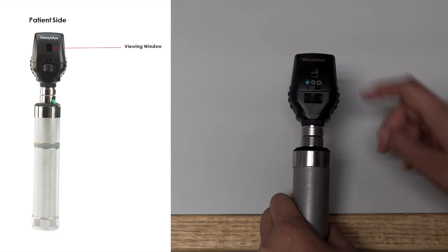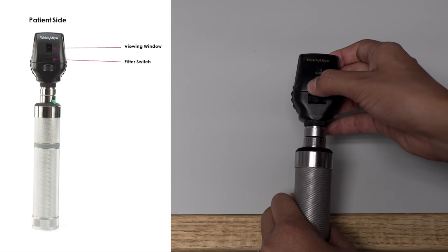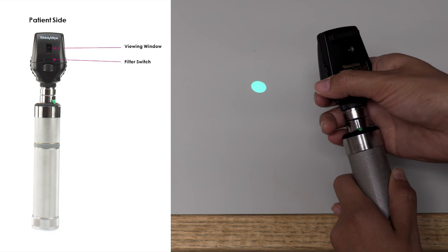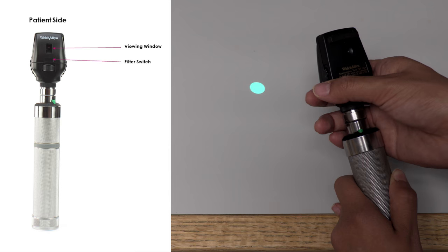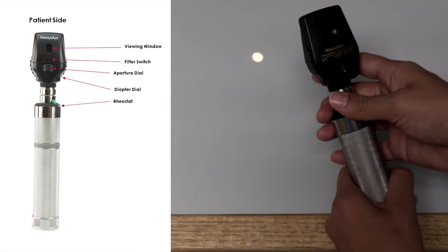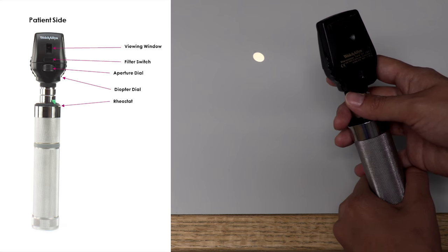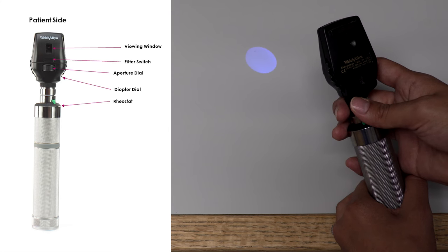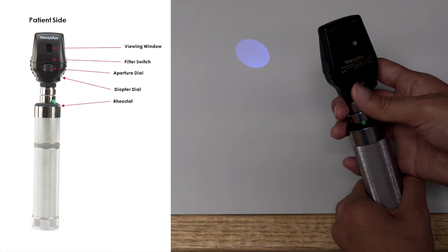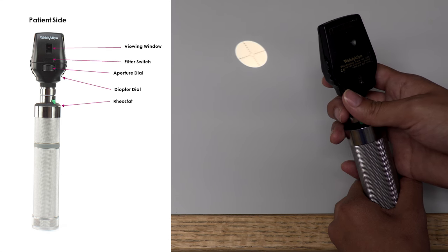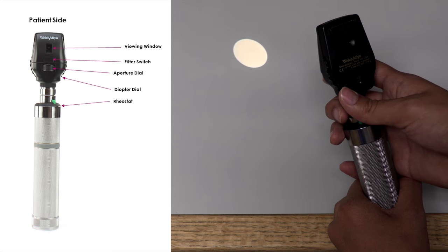The patient side includes the viewing window and the filter switch. This switch allows you to change the color of the light. The red-free light allows you to look more closely at the vasculature. The aperture switch allows you to change the size of the light. The small aperture allows you to look at a constricted pupil in a well-lit room. The blue light allows you to look at corneal abrasions or ulcers with the use of fluorescing dye. The slit allows you to look at contour abnormalities. The grid allows you to measure distances between lesions. The large light allows you to look at a dilated pupil after using mydriatic drops.